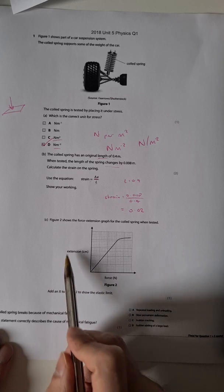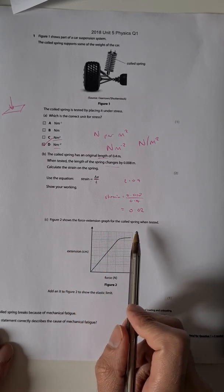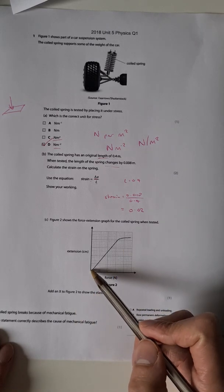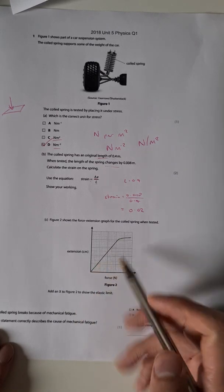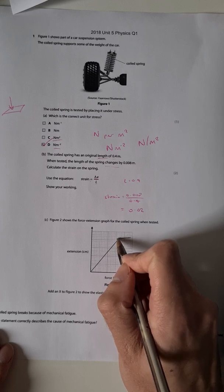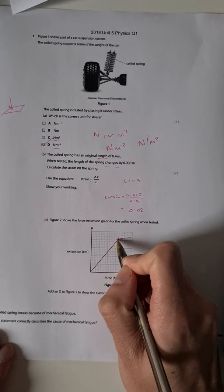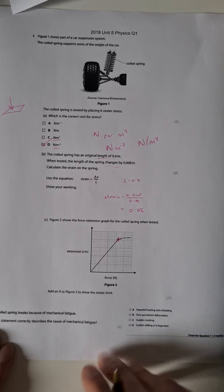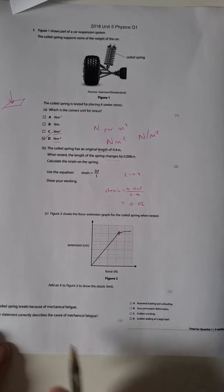Then we've got a force extension graph and it asks to figure and show the elastic limit. So that's the point where it's no longer proportional, so the moment it starts to curve. So we've got straight and then it starts to curve and it's that point where it switches between the two. So an X there.